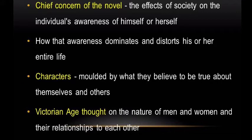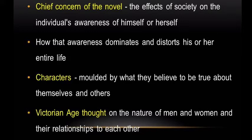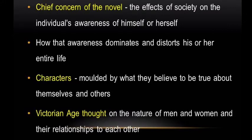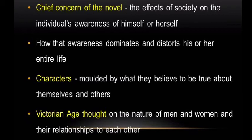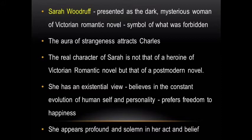It seems important to outline a few features of Victorian literature that Fowles goes on to adopt or distort in this novel. The chief concern of the novel appears to be the effects of society on the individual's awareness of himself or herself, and how that awareness dominates and distorts his or her entire life including relationships with other people. All the main characters are molded by what they believe to be true about themselves and others.